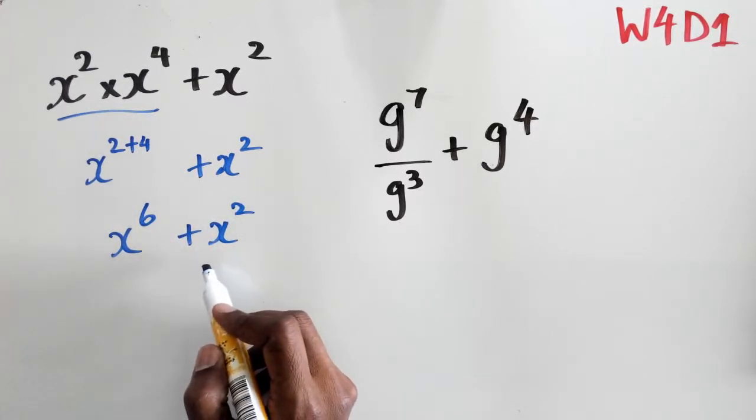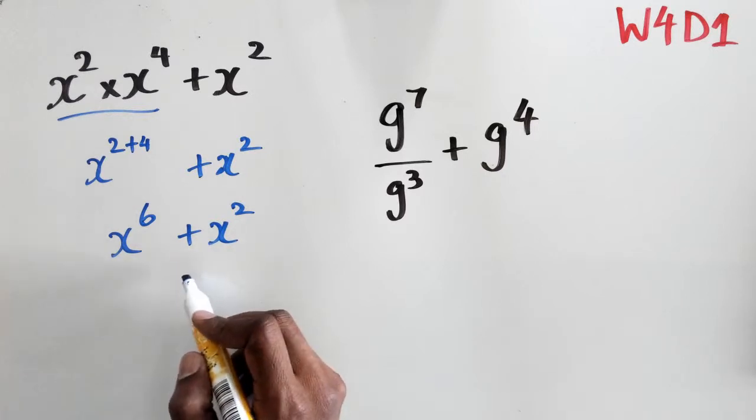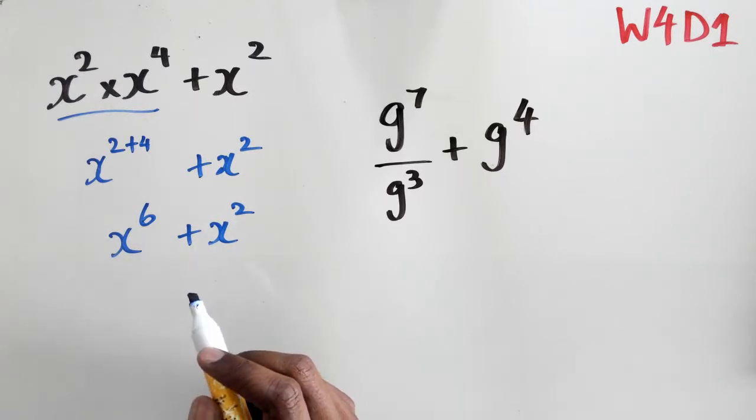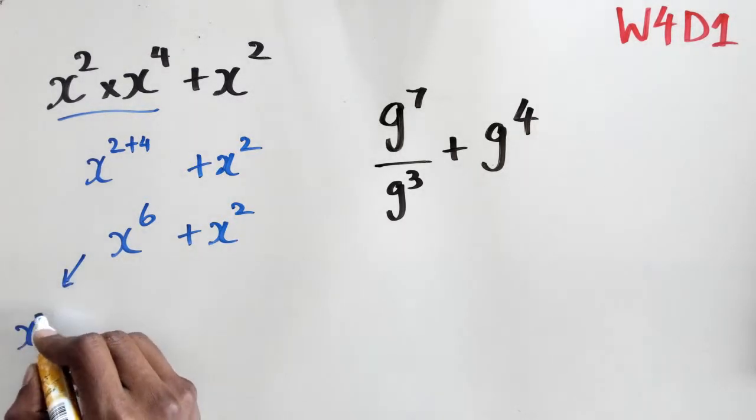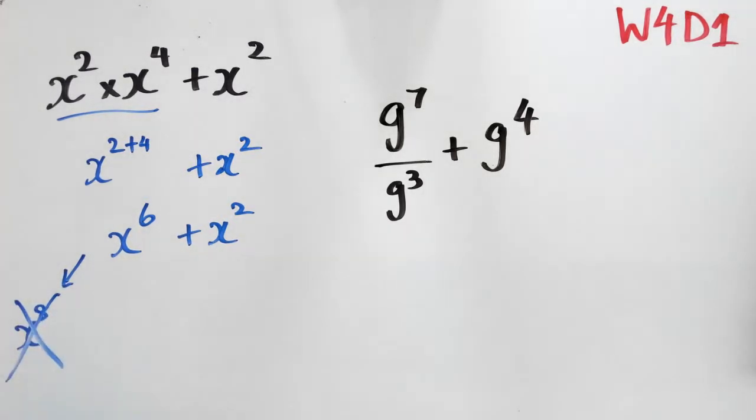Now remember, these are not like terms, so that means you can't actually add them up together. Most likely, somebody will make this mistake of writing this as x to the power of 8, and that's actually incorrect. So this is our final answer, and we leave it as it is.